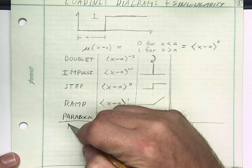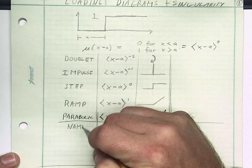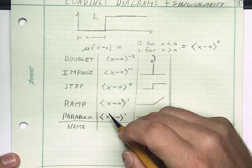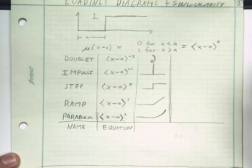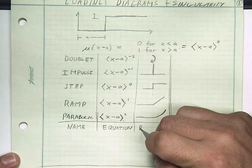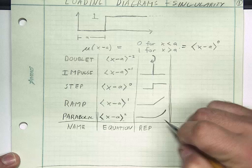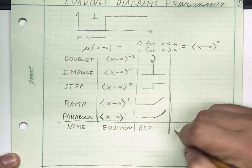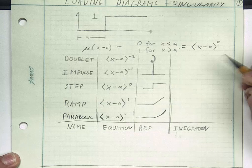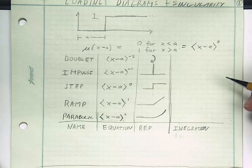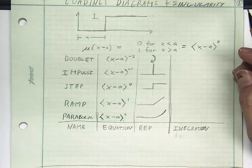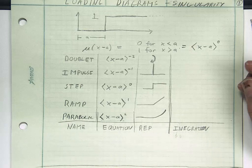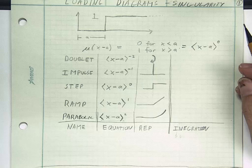Let me go back and clarify. The parabolic function is defined as x minus a to the second power, not divided by 2. Some definitions for this: this is the name of the function, the singularity function. This is its equation. This is its representation, REP for short. This is its integration. We're going to find some patterns here. Don't worry too much about the details about why this works.